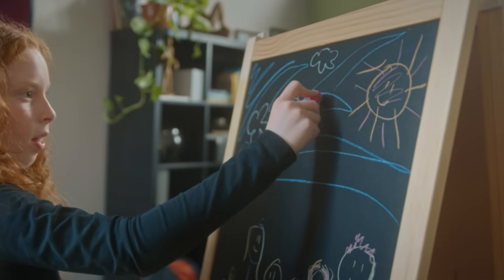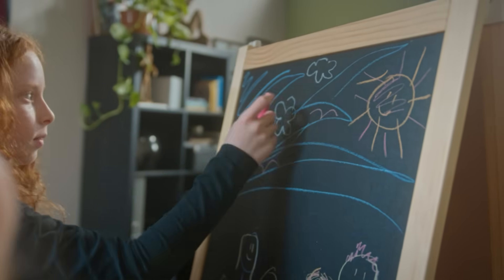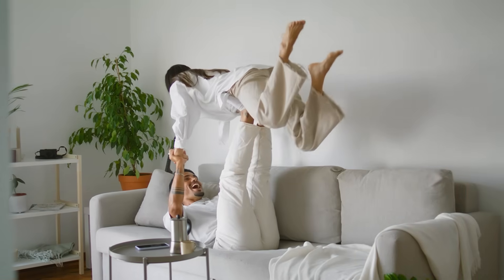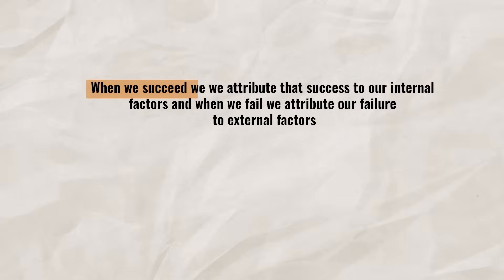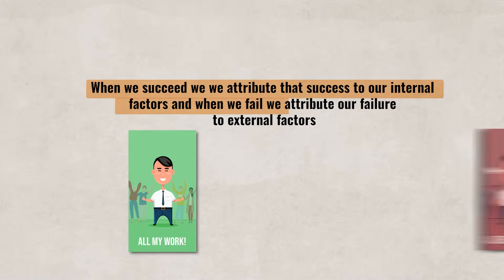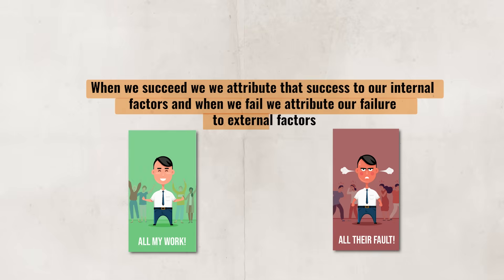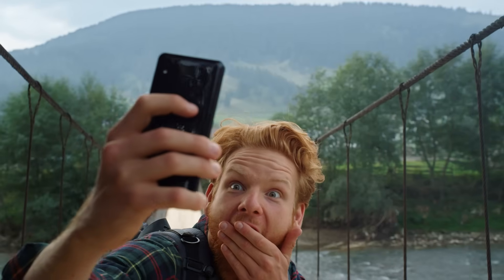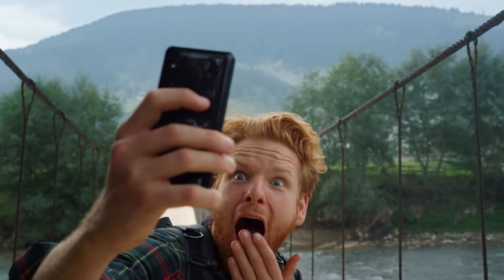Generally, when we as individuals reflect on our own behaviors and actions, we focus on the positive elements. When we succeed, we attribute that success to our internal factors. And when we fail, we attribute our failure to external factors. This is known as a self-serving bias. The self-serving bias can help protect an individual's self-esteem, since the bias puts the blame for our failure on external factors, but also can prevent us from learning from our own mistakes.